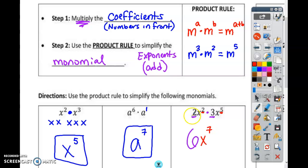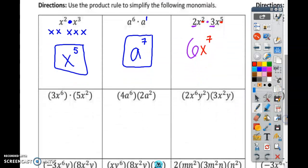So again, the big numbers you multiply. The little numbers you add. Let's do another one. What am I going to do with the 3 and the 5? Multiply. What's 3 times 5? 15. What am I going to do with the 6 and the 2? Add. X to the power of 8.